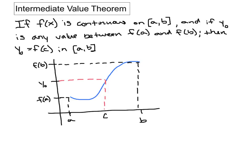The intermediate value theorem says that if we have a continuous function from a to b, and if we have a function value y₀ that is in between the two function values at a and b, that means this value y₀ is equal to the function value at some point c. This is going to make it theoretically possible to have zeros and roots of a function.